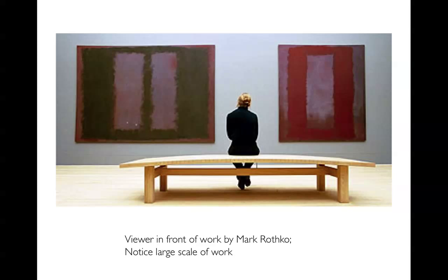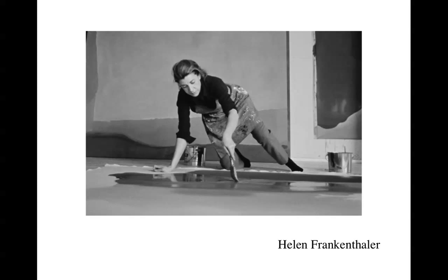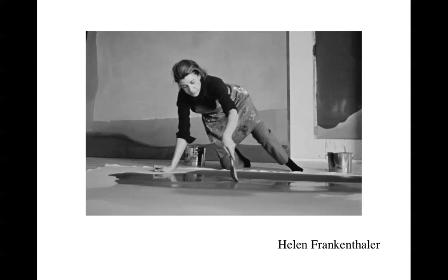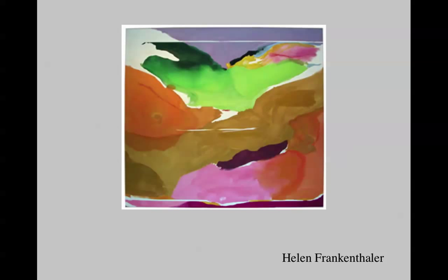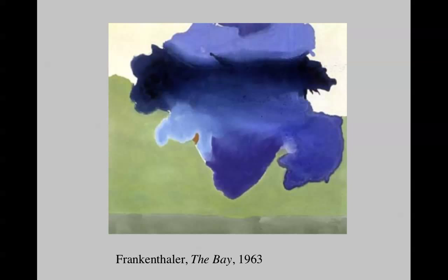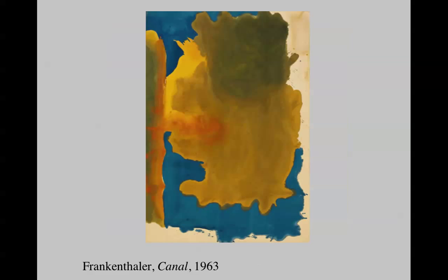Helen Frankenthaler is a second-generation abstract expressionist. Her technique also involves working on the floor, using very thin stains across the canvas to yield large abstract images. Many of hers have a relationship to the landscape — this one almost reads as looking up through a valley across sand and desert and greenway. Another called The Bay features much larger, soft shapes where you really enjoy a slow progression, letting your eyes move slowly through the colors, taking in all the slight nuances as they change very slowly.